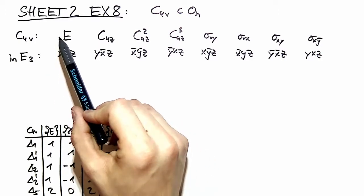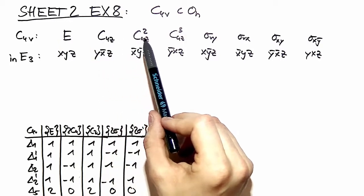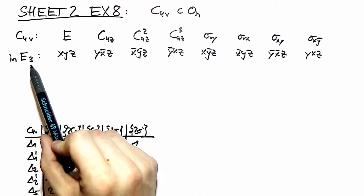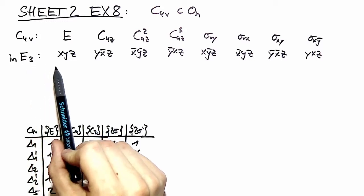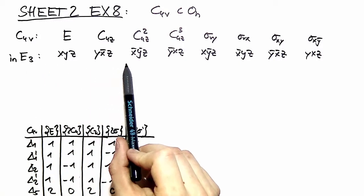It's just that I take all elements of C4V and describe how they behave in a three-dimensional Euclidean space and how the coordinates transform.